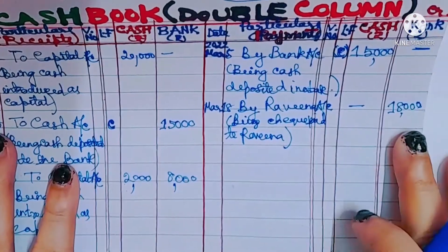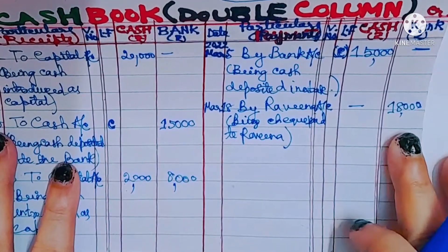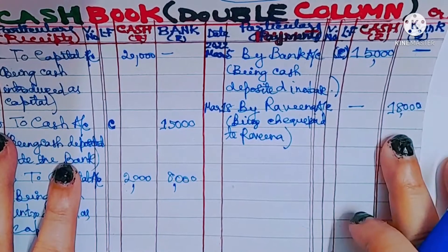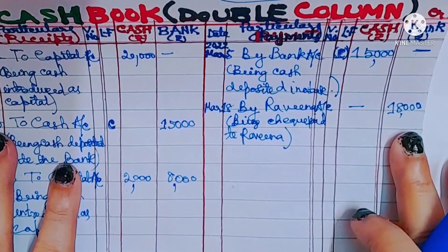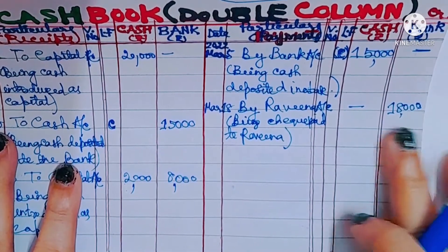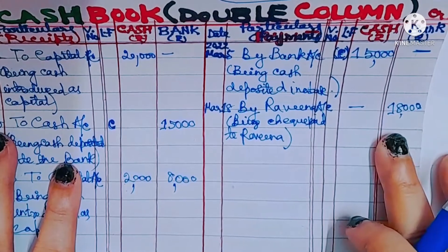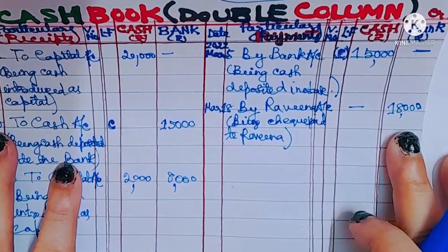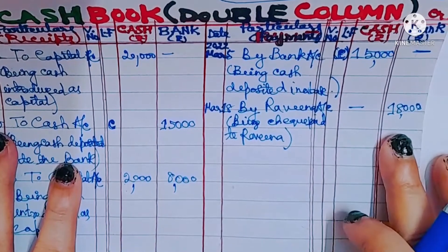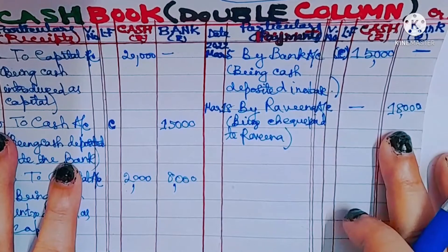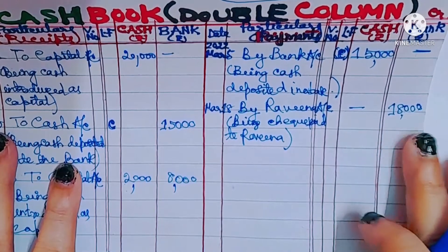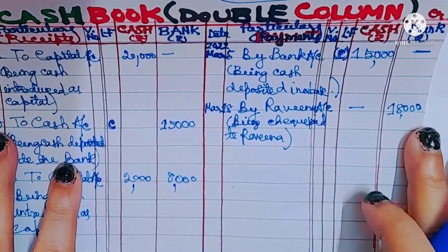Bank column represents bank account — a personal account. According to personal account, the giver of the benefit is credited. When the check is paid to Raveena, the bank is the giver of the check. So bank account will be credited and 18,000 will be credited.